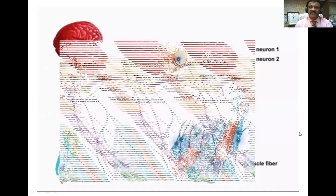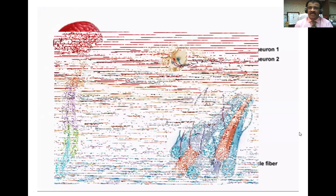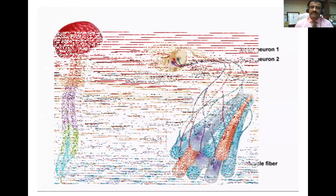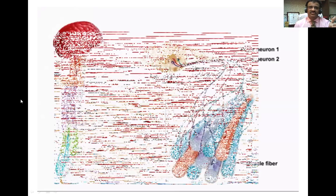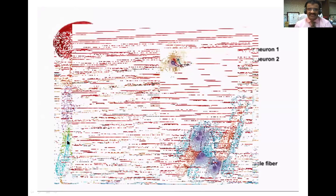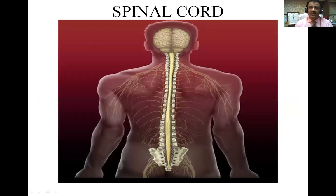You can see the spinal cord image here showing the brain and spinal cord, which is the central nervous system. The spinal cord is almost 18 inches long, that means 45 centimeters. It starts from the foramen magnum and ends at the level of the upper border of the L1 vertebra.